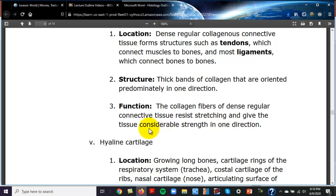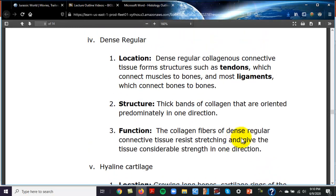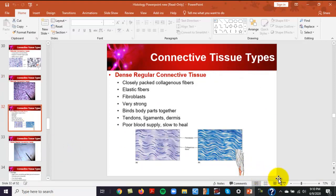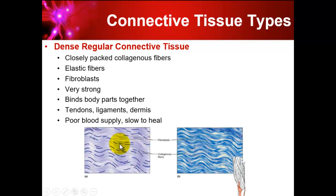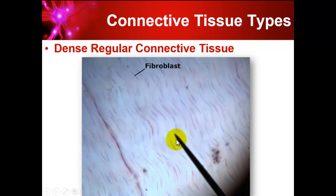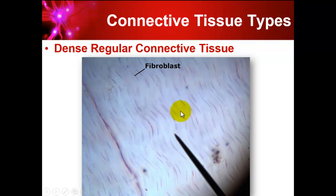Dense regular tissue resists stretching and gives the tissue considerable strength in one direction — essentially keeping bones and muscles together. In the lab slide, you can see the collagen fibers oriented in one wavy direction, with fibroblast nuclei visible as dark areas within the tissue.